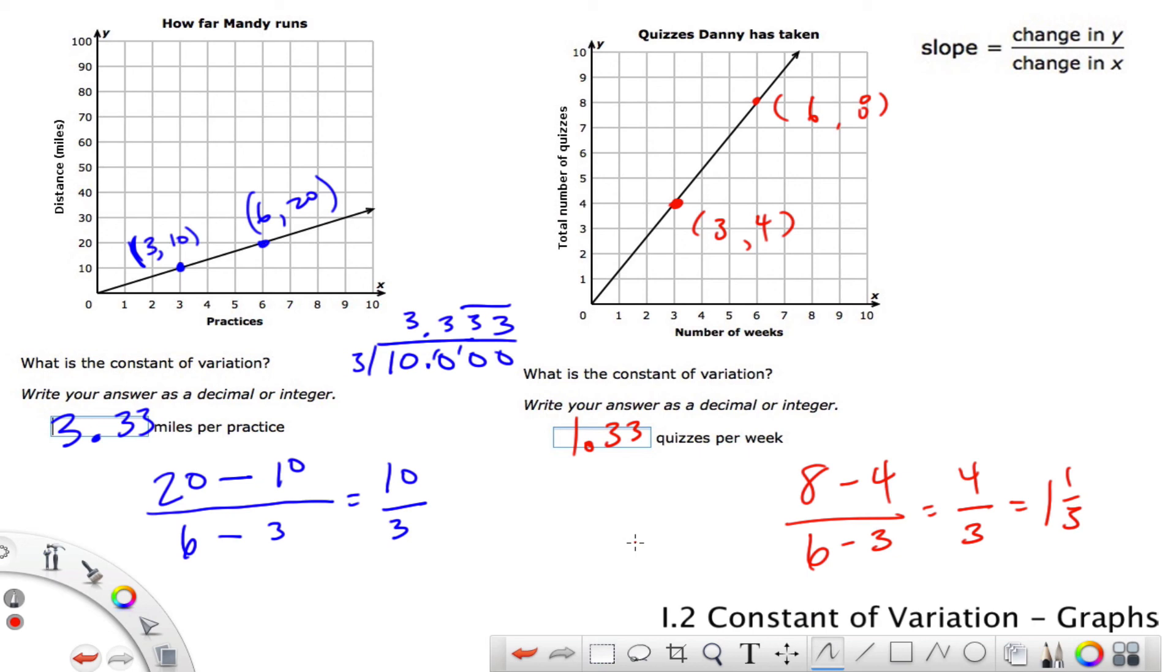So that is the constant variation. Again, you're just finding the slope of the line in the graph after you've found two points using their x, y coordinates. And we say y sub 2 minus y sub 1 over x sub 2 minus x sub 1.